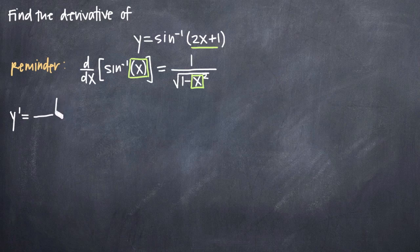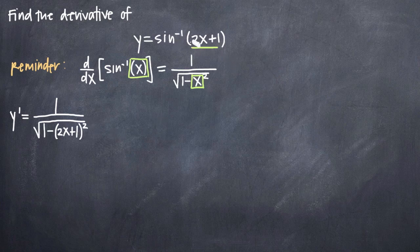We know the derivative of arc sine is the formula on the right-hand side, so we'll write 1 over the square root of 1 minus 2x plus 1 squared — plugging in whatever is on the inside of our arc sine. That is the derivative of the outside piece. But because we have something more involved inside our arc sine than simply x, we need to multiply by the derivative of the inside function. The derivative of 2x plus 1 is 2, so we multiply our result by 2. That's how we apply chain rule.